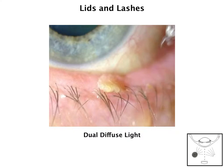Sometimes we see certain lid lesions, and in this case we want to use a dual diffuse light because that helps to show the three-dimensionality of the lesion that we're looking at. It also improves the overall quality of the photograph so you get a very clear, evenly illuminated image, so that way it's highlighted the best that it could possibly be.